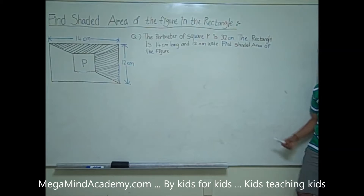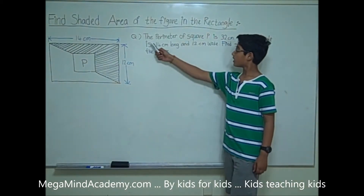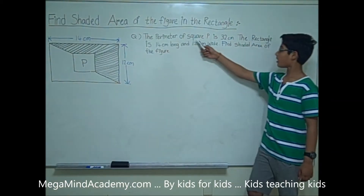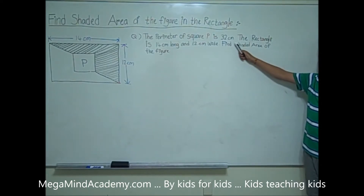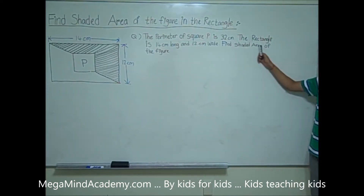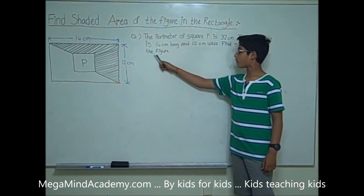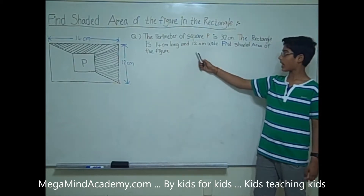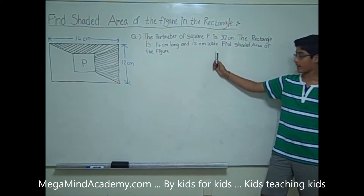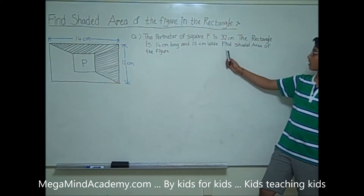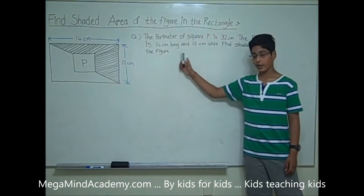Let's say we have a problem to solve: the perimeter of square P is 32 cm. The rectangle is 14 cm long and 12 cm wide. Find the shaded area of the figure.